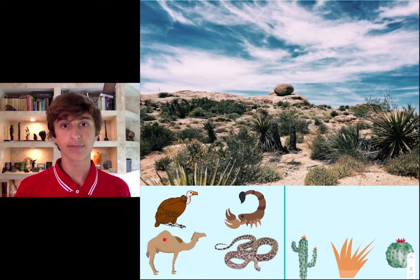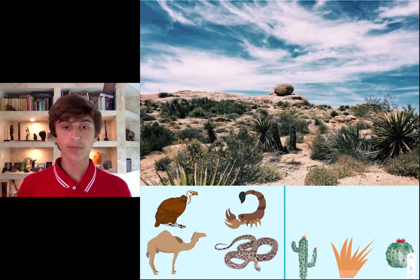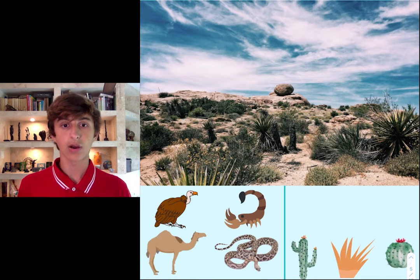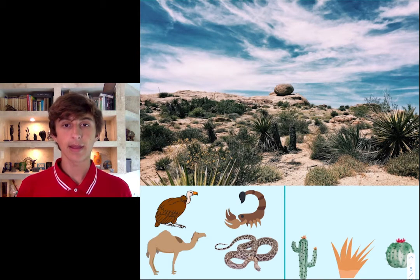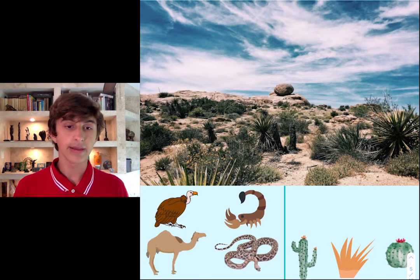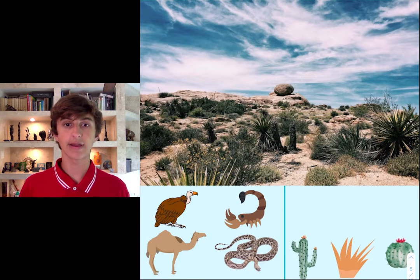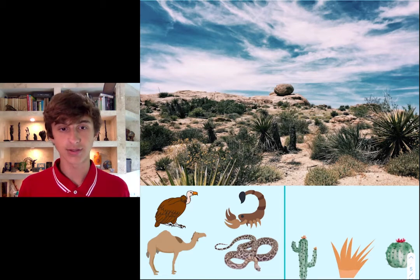The camel can store water in its hump and go a long time without any water. The scorpion and the snake can bury themselves during the day to stay out of the heat, then come out later when it's cooler. The vulture flies around looking for things that are already dead to feed on — and because it's a desert, lots of things die.